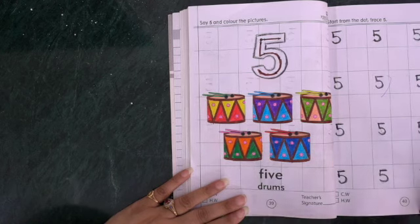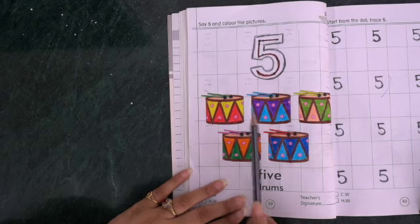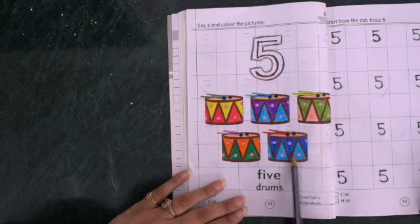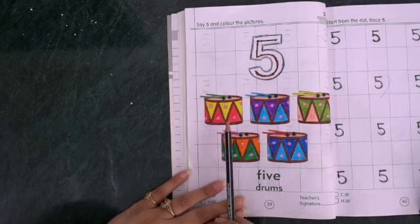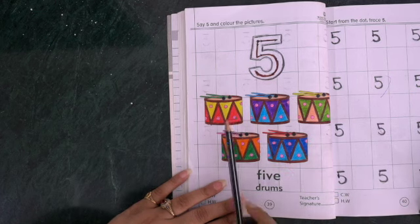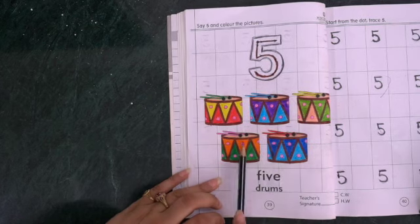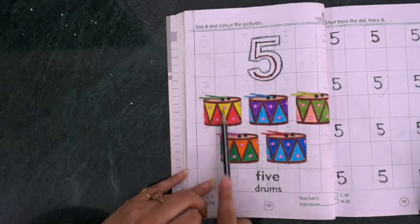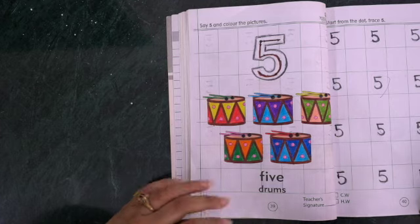Excellent, well done. Now, how many drums are here? Let's count together. There are one, two, three, four, five. There are five drums. Let's count with me, repeat after me.